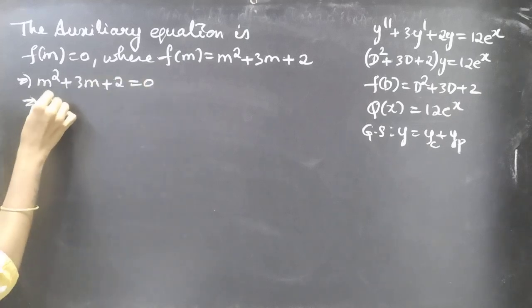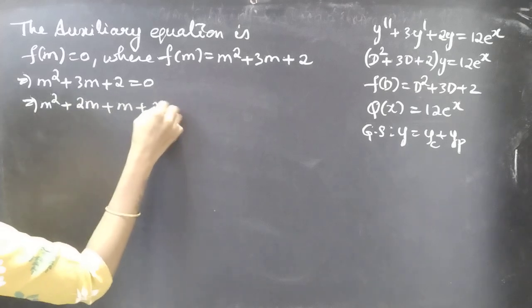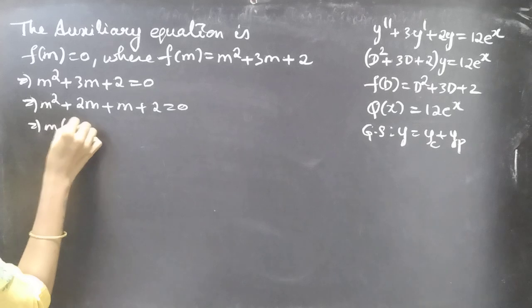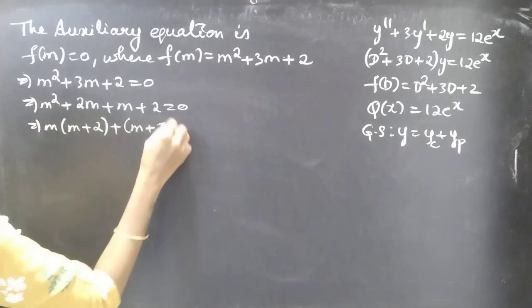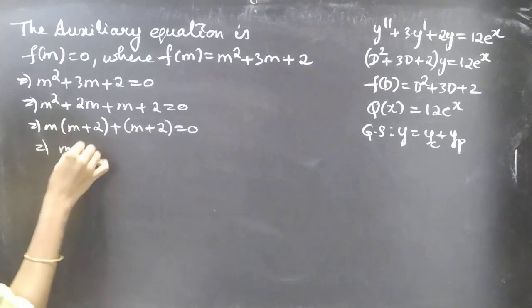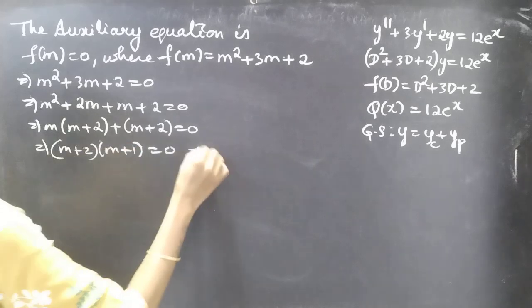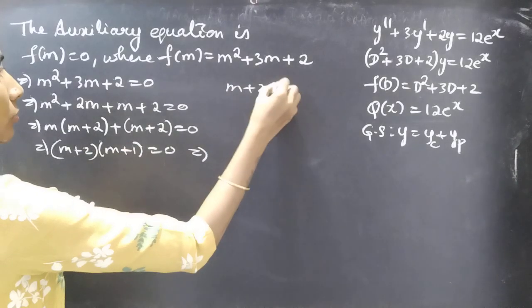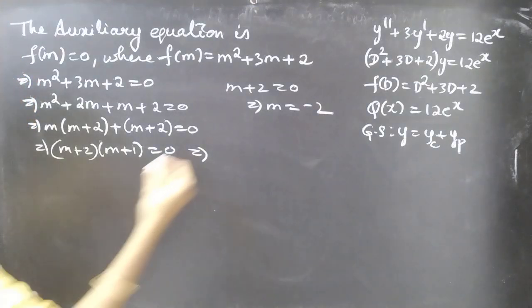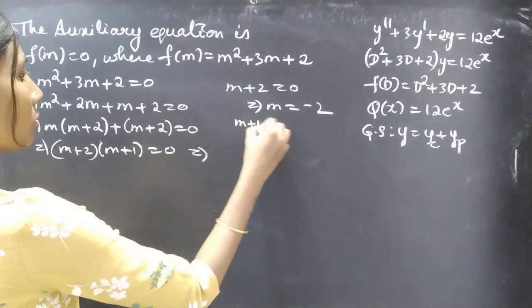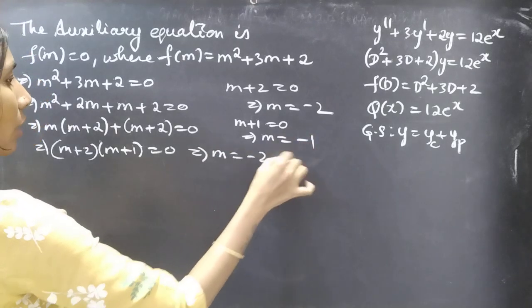We need to find the roots of this equation. Let's split 3m as 2m + m. Taking m common from the first two terms and factoring the remaining terms, we equate each factor to zero. From m + 2 = 0 we get m = −2, and from m + 1 = 0 we get m = −1. So the roots are m = −2 and m = −1.